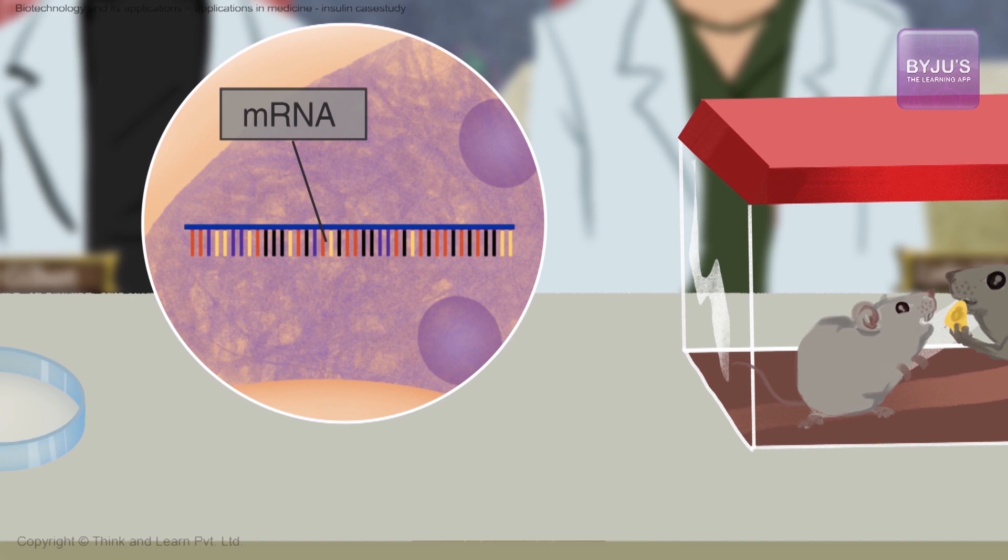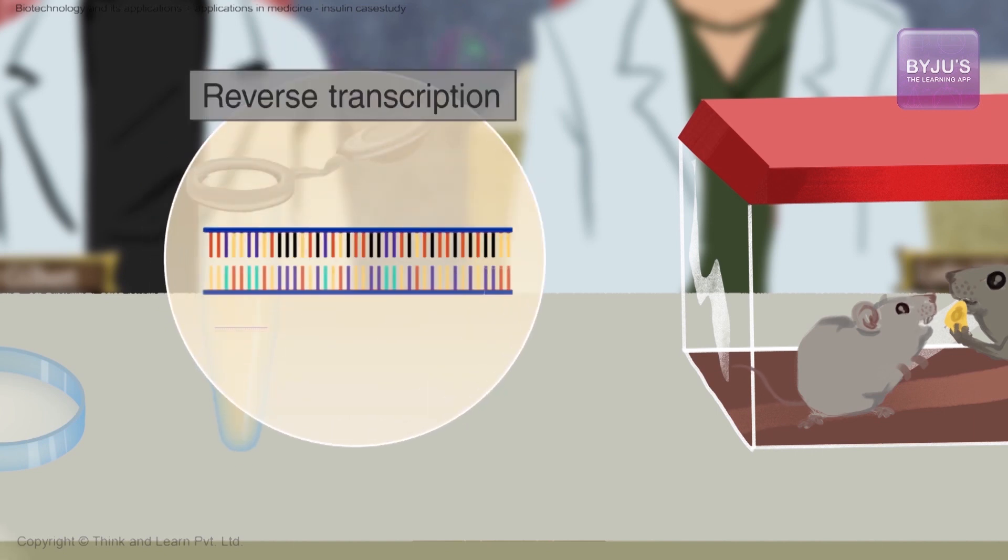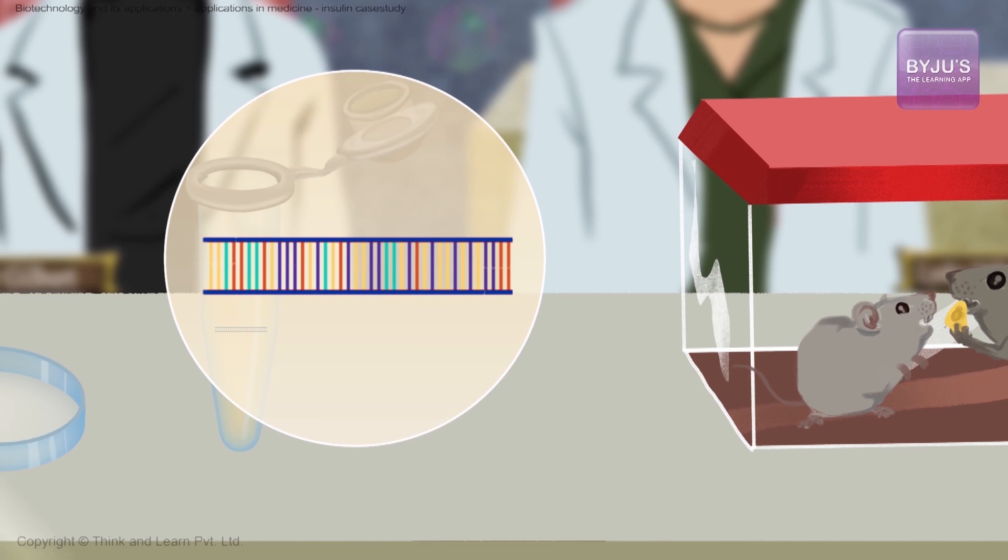The mRNA of the cancer cells was transcribed into cDNA using reverse transcriptase and then cut with restriction endonucleases.